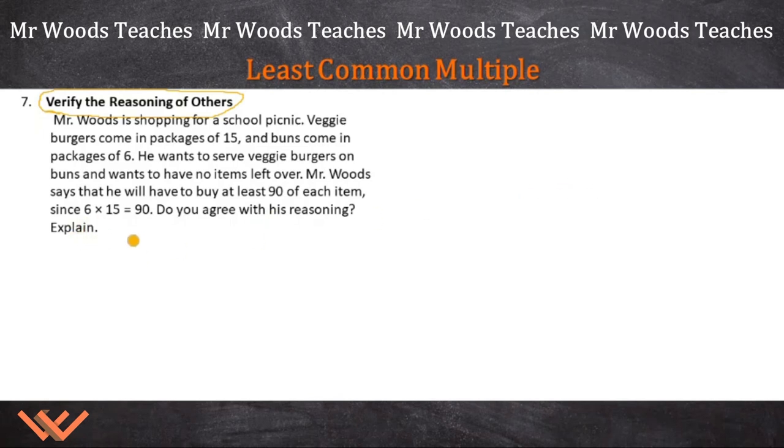I don't. And the reason is because we're looking for the least common multiple. And all he did was just factor it out. Here's how 6 times 15 is equal to 90. I mean, that's one way to do it. And it does give you an answer. However, if we look for this least common multiple, you can get something different. So I'm going to start with 15.